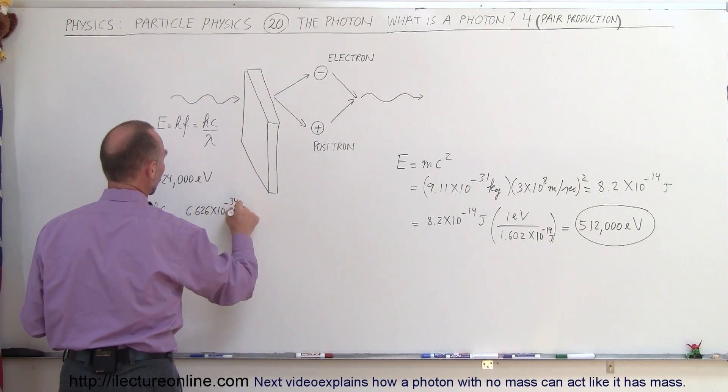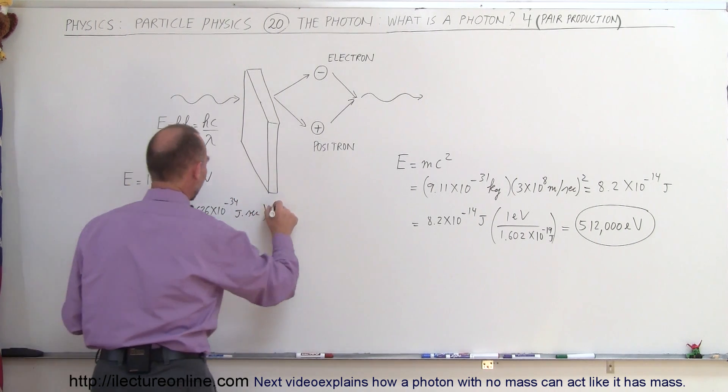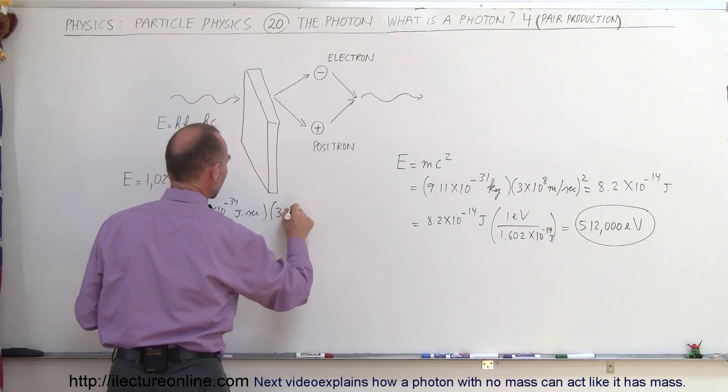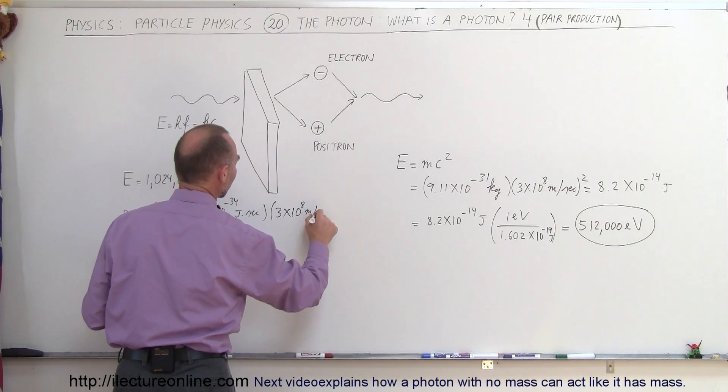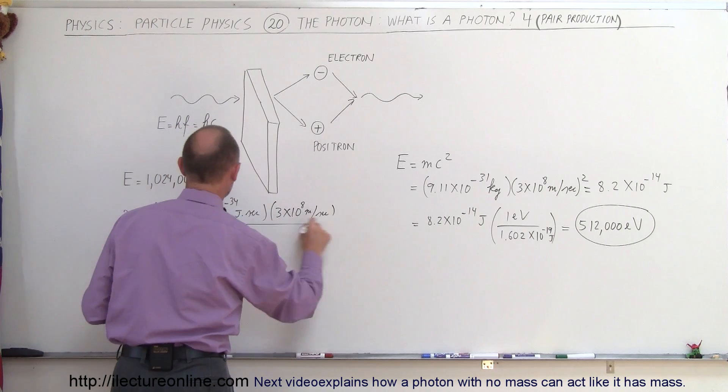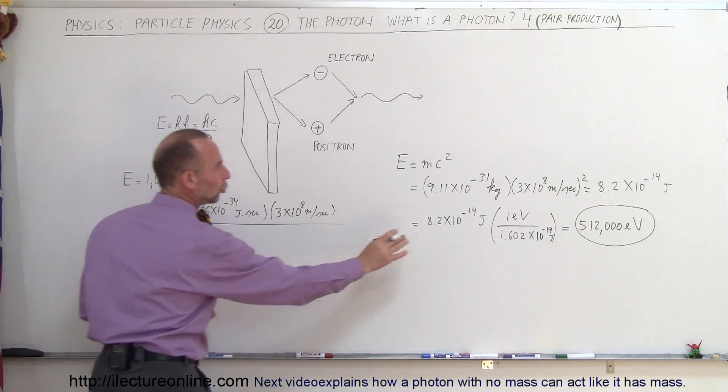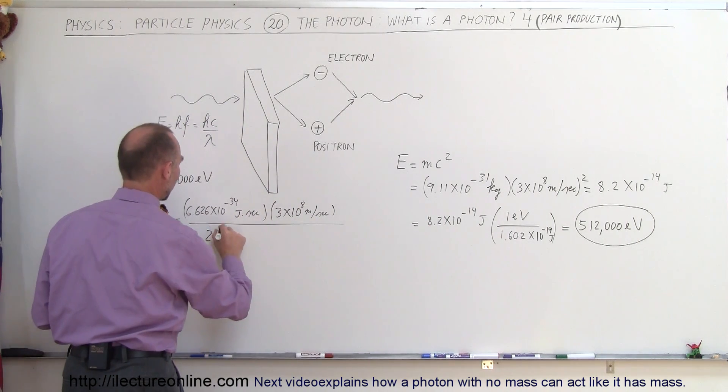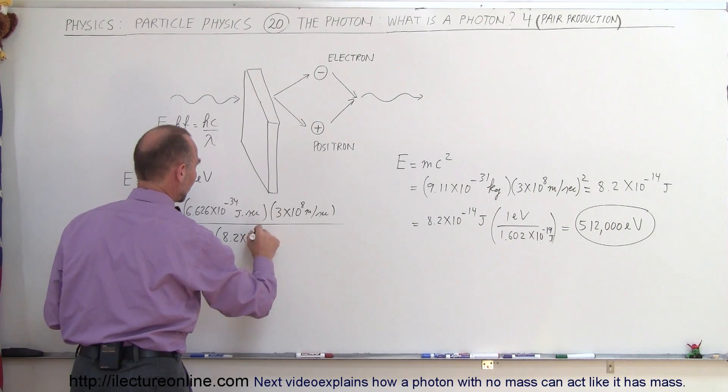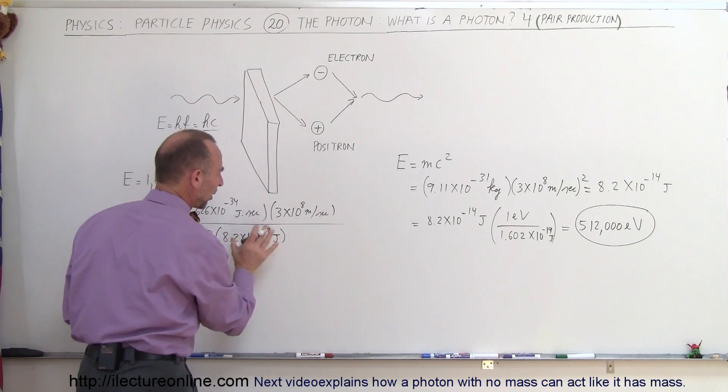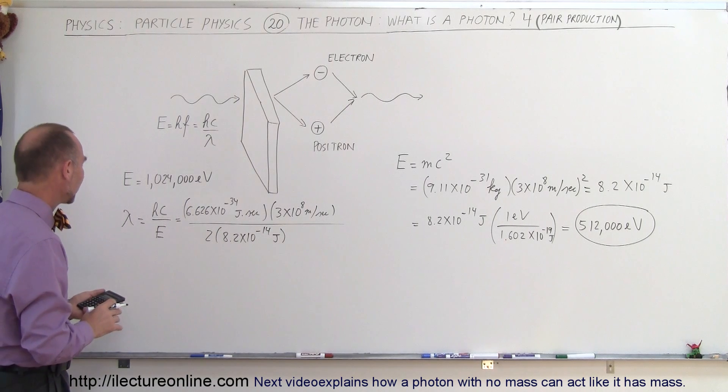Multiply times c, 3 times 10 to the 8 meters per second, and divide by the energy for two of these particles, so it would be 2 times 8.2 times 10 to the minus 14 joules, because we want to do it in joules to get the correct number here. So the wavelength would be...